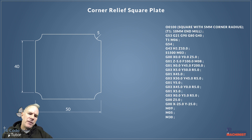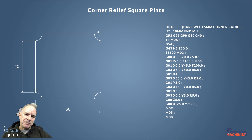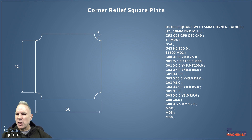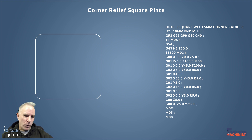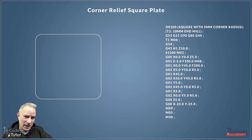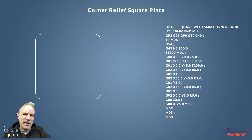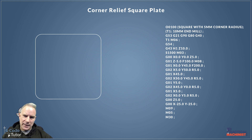That's a very basic program for female radiuses. The interesting thing is if you take all those G03s and change them to G02s — and change nothing else — you end up with a male corner radius square. It works exactly the same way; we just change G02 to G03 and it gives us these inverted radiuses.